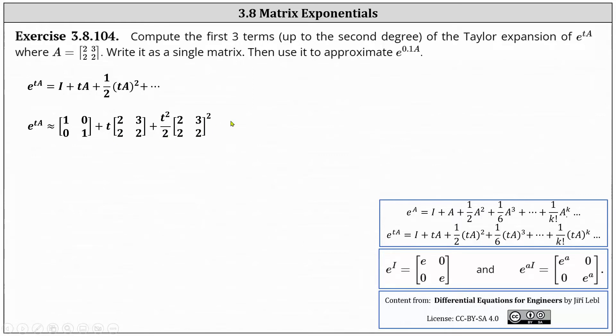Next, we square matrix A. Squaring matrix A results in the two by two matrix with entries 10, 12, 8, and 10.